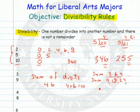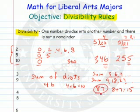Let's take 87. If you add those up, 8 plus 7 equals 15. Since 15 is a multiple of 3 but not 9, 87 is divisible by 3, but not by 9.